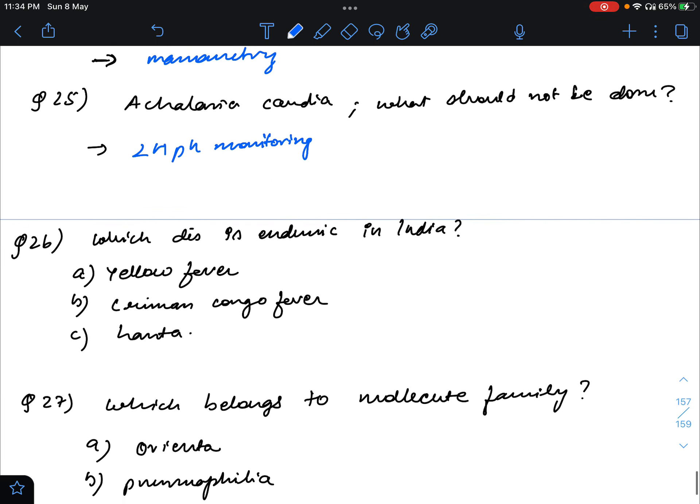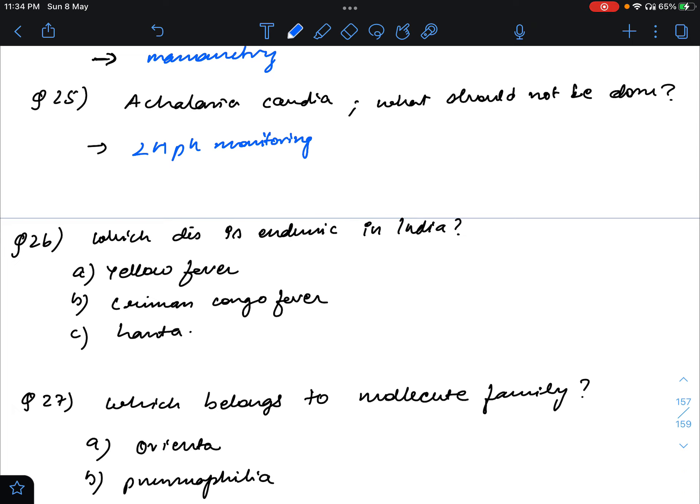Next question is which disease is endemic in India? So the answer to this is Crimean Congo fever. The setter told us very nicely that the name is Crimean Congo, but it is endemic, it is present in India. And the rest of the options are not endemic to India.